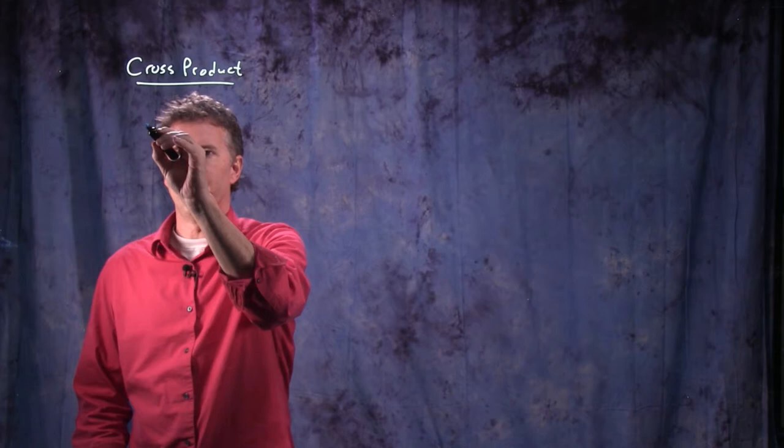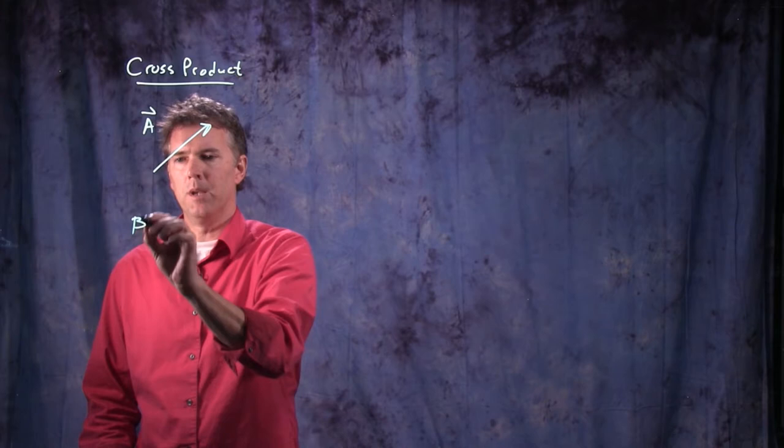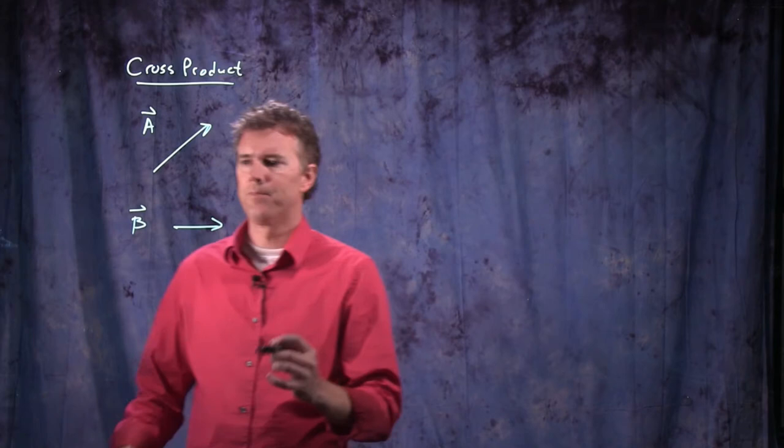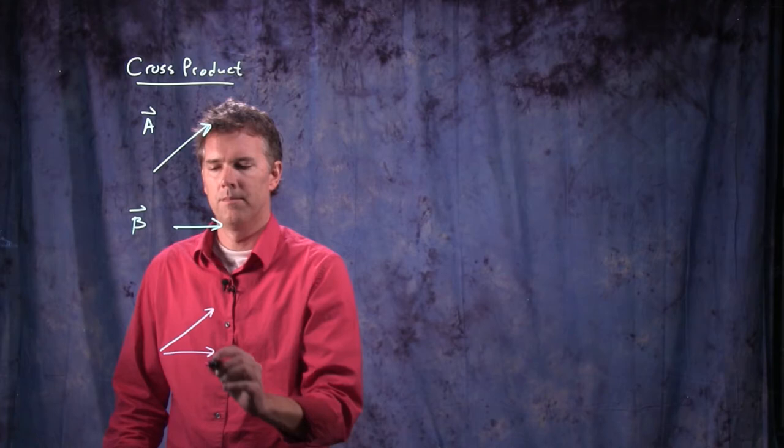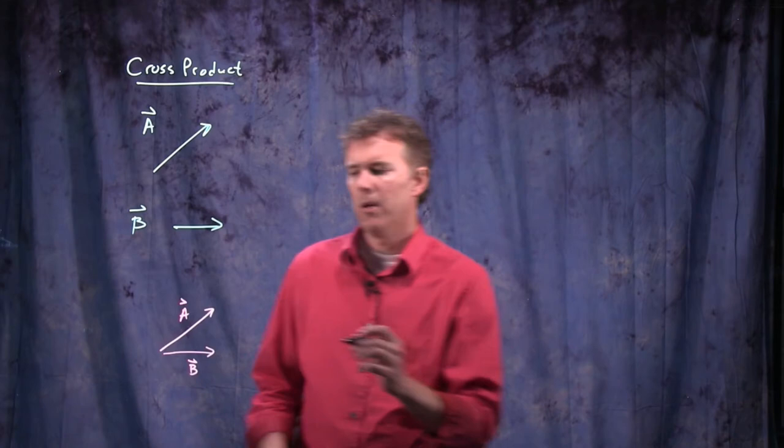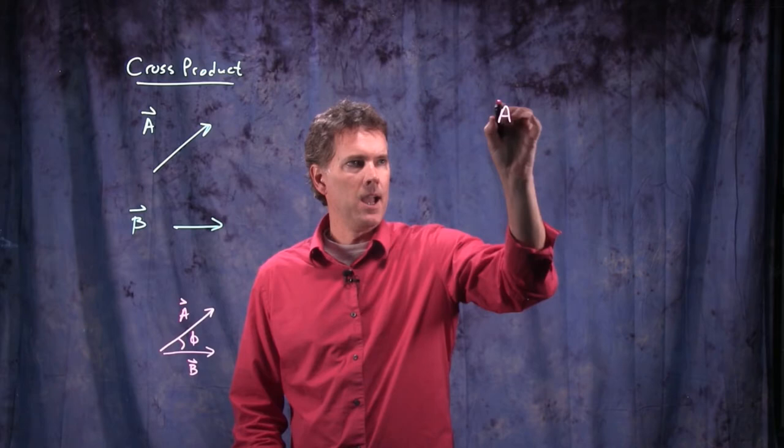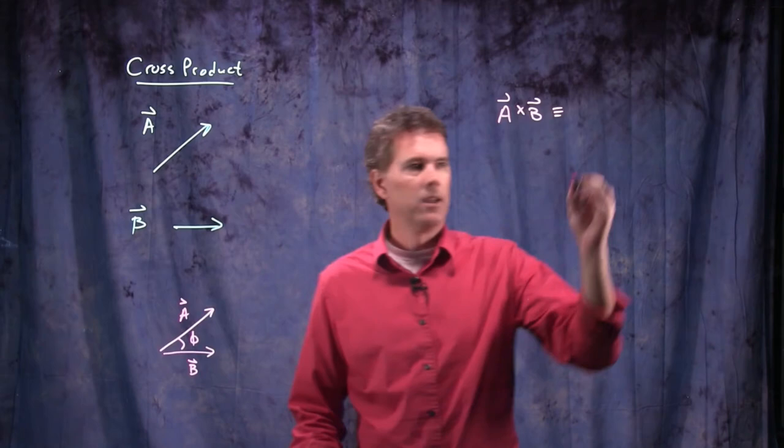Okay, what is this cross product that we're talking about? The cross product is the following. Let's say I have vector A, and it looks like this, and I have vector B, and it looks like that. And I want to figure out the cross product between these two, not the dot product. The way you figure it out is you put them together, A and B, and then you figure out what the angle is between them. And we're going to call that angle phi. Before when we did the dot product we called it theta, so in this case we'll call it phi.